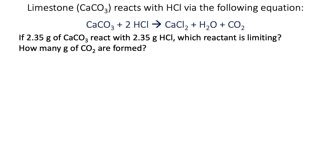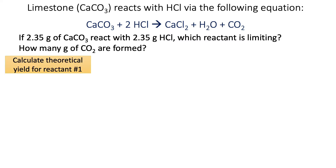Let's look at a typical limiting reactant problem. Here we have limestone — calcium carbonate — reacting with hydrochloric acid, and you can see the balanced equation. In our problem we have 2.35 grams of both calcium carbonate and hydrochloric acid. Which reactant is the limiting reactant, and how many grams of carbon dioxide are formed? We need to calculate two theoretical yields. Let's start with reactant one — calcium carbonate is listed first, so I'll do that first.